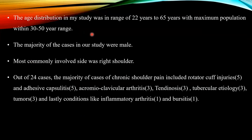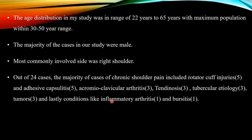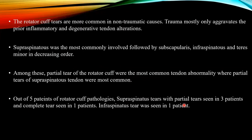The age distribution in my study ranged from 22 to 65 years, with the maximum population within the 30 to 50 year range. The majority of cases were male and the most commonly involved side was the right shoulder. Out of 24 cases, the majority included rotator cuff injury and adhesive capsulitis, followed by acromioclavicular arthritis, tendinosis, tubercular etiology, tumor, and one case each of inflammatory arthritis and bursitis.